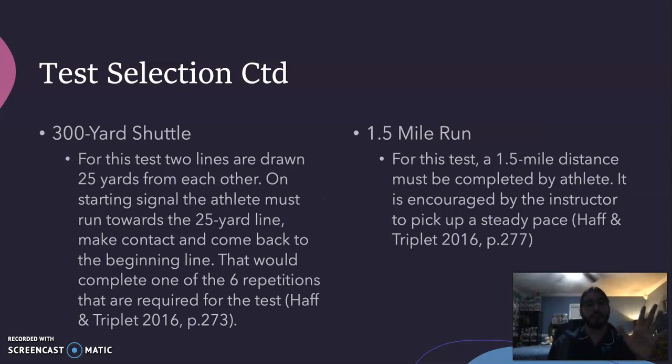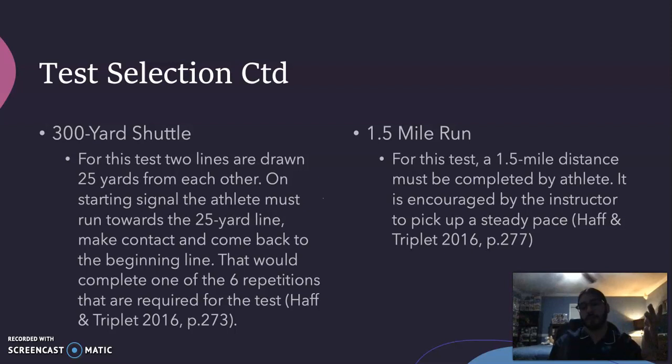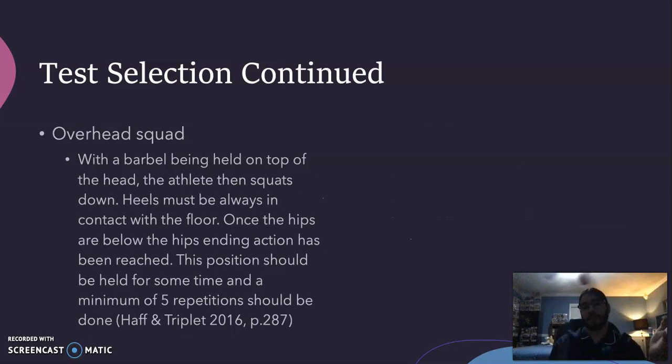Starting from the signal, the athlete must run toward the 25-yard line, make contact, and come back to the beginning line; this is repeated for six repetitions to complete the test. For the 1.5-mile run, a distance of 1.5 miles was set and the athlete was encouraged to pick up a steady pace. For the overhead squat, the barbell is held overhead.